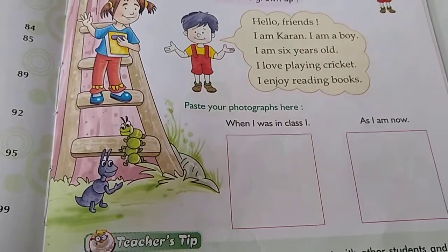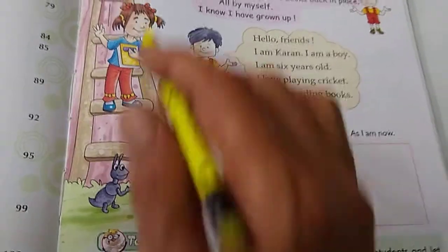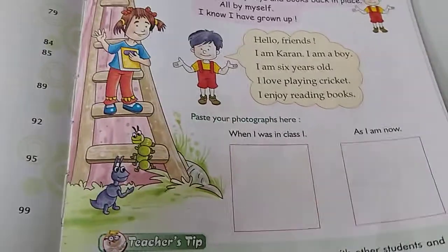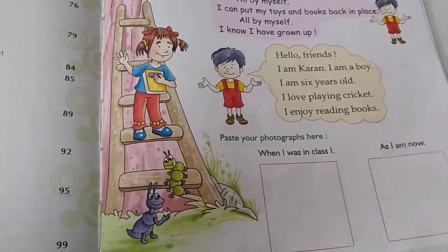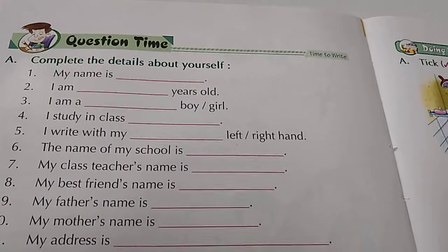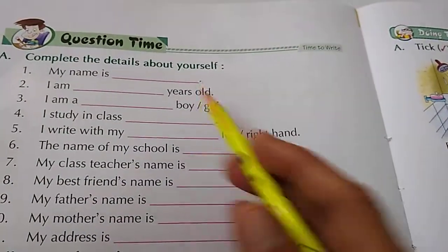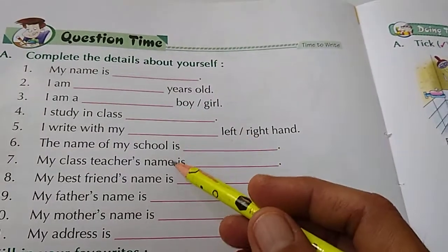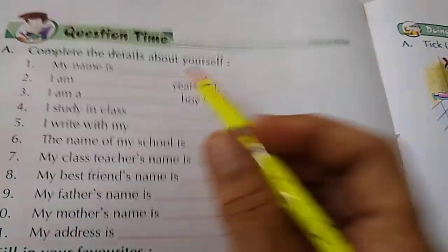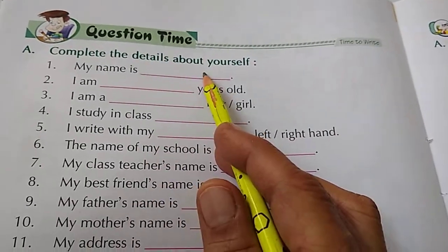I like gardening — understood? This type of introduction you will write about yourself. You have to give your introduction like this. Now it is question time. Here is the format for how you will introduce yourself. The first field is: My name is — you will complete it.